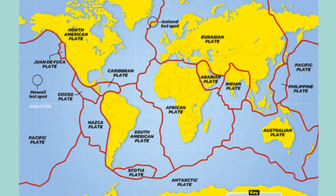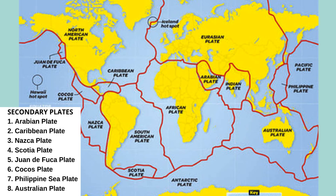Small plates are known as secondary plates. In our map, how many are those? Yes, we have 8. And these are the following: Arabian plate, Caribbean plate, Nazca plate, Scotia plate, Juan de Fuca plate, Cocos plate, Philippine Sea plate, and Australian plate.